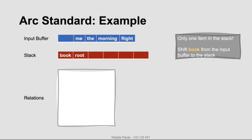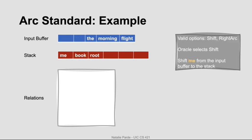Now we have two things on the stack, still no relations, and the input buffer contains 'the morning flight.' The oracle needs to decide which operator to apply. We recall that you can't apply left ARC if the second word on the stack is the root, so that option's out. We could apply either right ARC or shift. The oracle considers the available knowledge and decides to perform another shift operation.